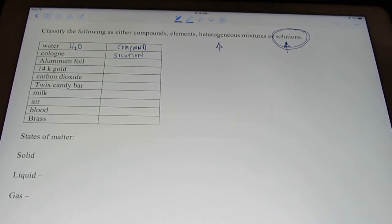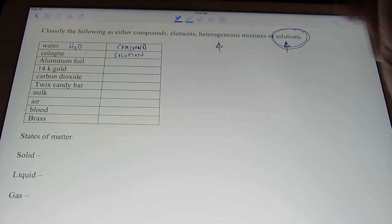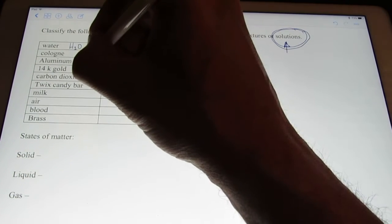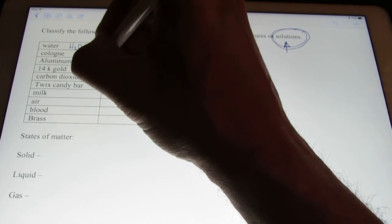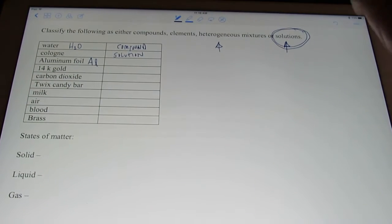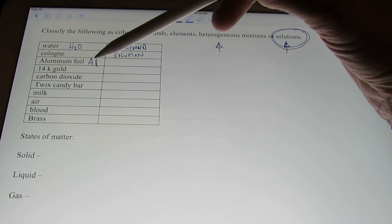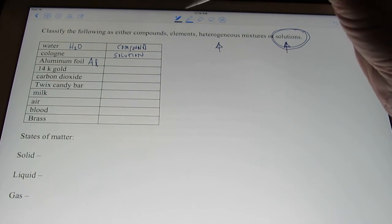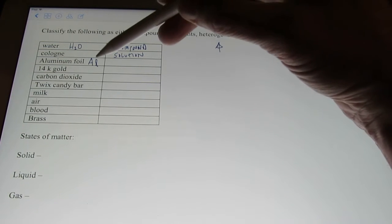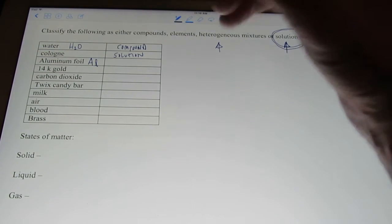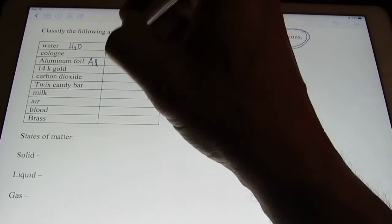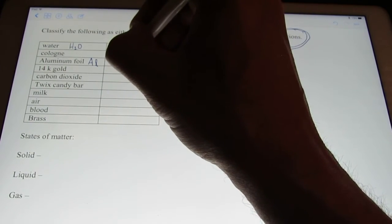Here's one. Aluminum foil. Most of you are going to miss this one, I'll bet. Yeah. Aluminum foil. The chemical symbol for aluminum is Al. So, it's not a compound because it's not two or more different elements chemically bonded together. But it is an element, right? I have only aluminum atoms in aluminum foil. It's not a mixture. It is simply aluminum atoms. So, I would call aluminum foil an element.